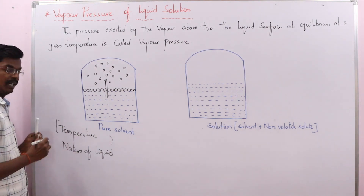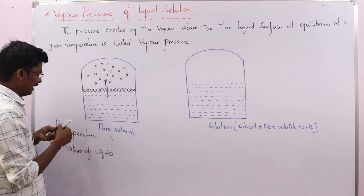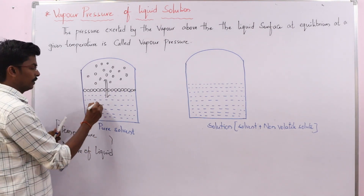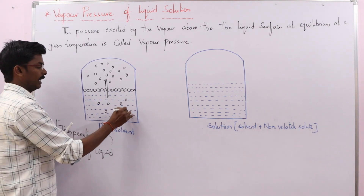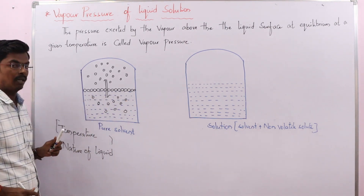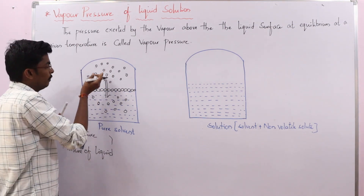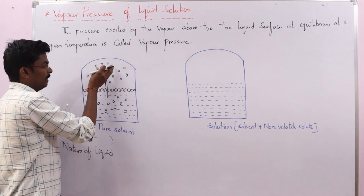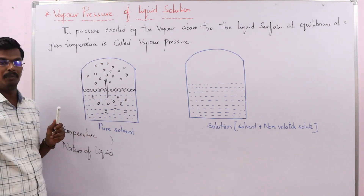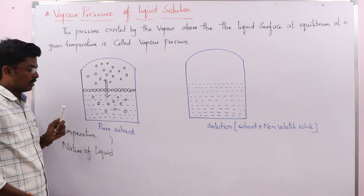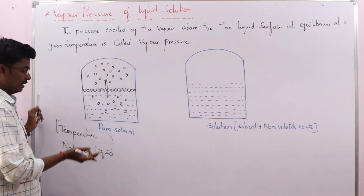When you increase the temperature, the kinetic energy of these volatile solvent molecules increases, allowing them to easily escape from the liquid and become vapour. These vapours exert pressure, so the vapour pressure increases as temperature increases.